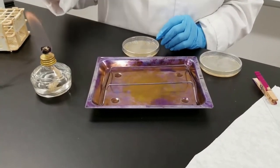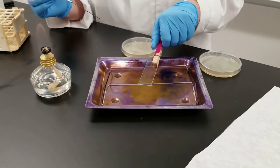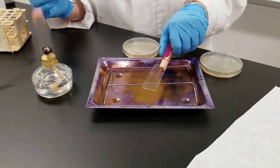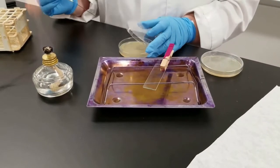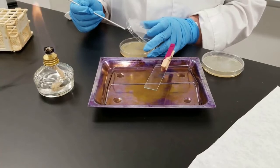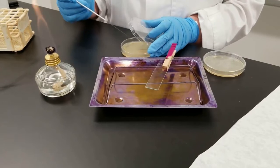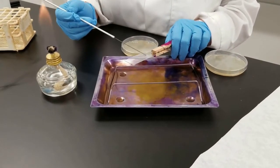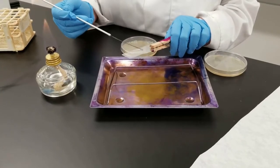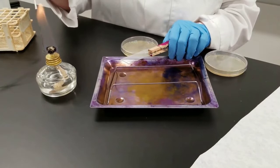The first thing we're going to do, as always, is to flame our loop. We have a slide ready to go here. I have two different cultures. The first one that I'm going to do right now is Staphylococcus aureus. So I'm going to take a culture, make a smear here, and flame my loop.